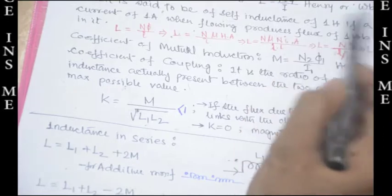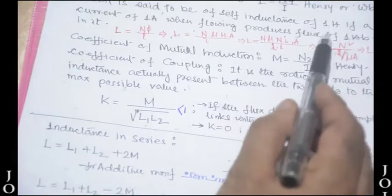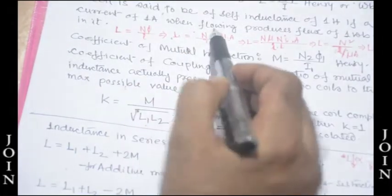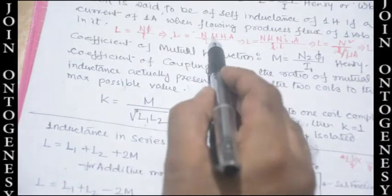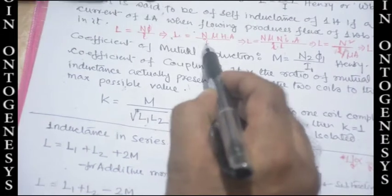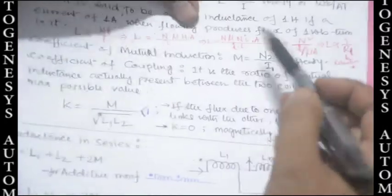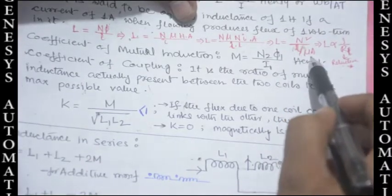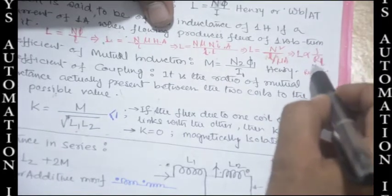Coefficient of self induction: L = Nφ / I, in Henry or Weber per ampere-turn. A coil has self inductance of 1 Henry if a current of 1 ampere produces a flux of 1 Weber-turn in it. Substituting phi = B·A = μHA and H = NI/L, we get L = μN²A / L, which can be written as N² / (L/μA), meaning L = N² / reluctance.